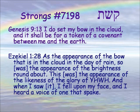When it talks about the rainbow in Hebrew, it always says 'the bow in the cloud.' This bow — the same word, keshet — is also used for an archery bow. But when it talks about the rainbow, it talks about the bow in the cloud. Genesis 9.13: 'I do set my bow in the cloud, and it shall be for a token of a covenant between me and the earth.'